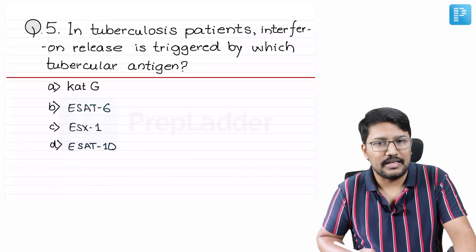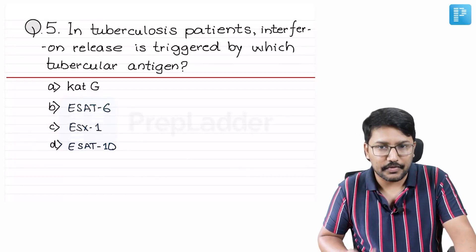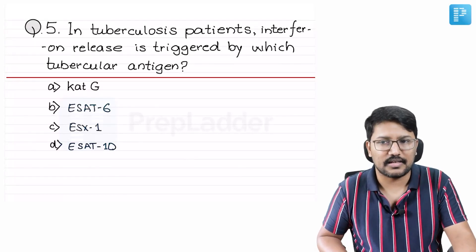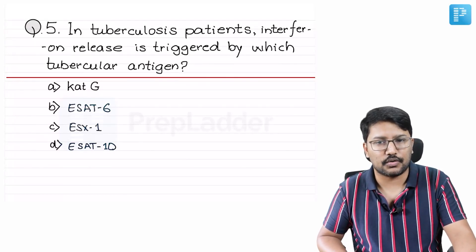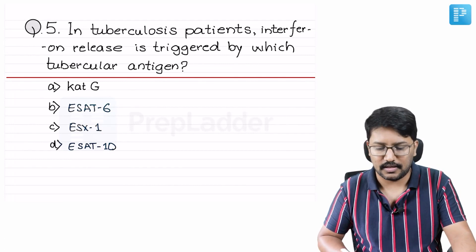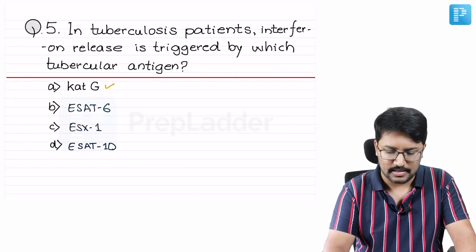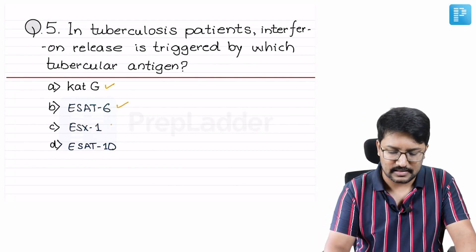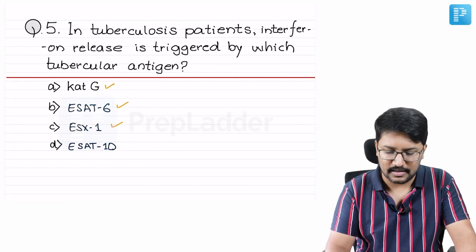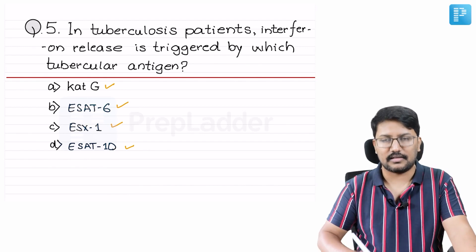In tuberculosis patients, interferon release is triggered by which tubercular antigen? The options are CATG, ESAT-6, ESX1, and ESAT10.